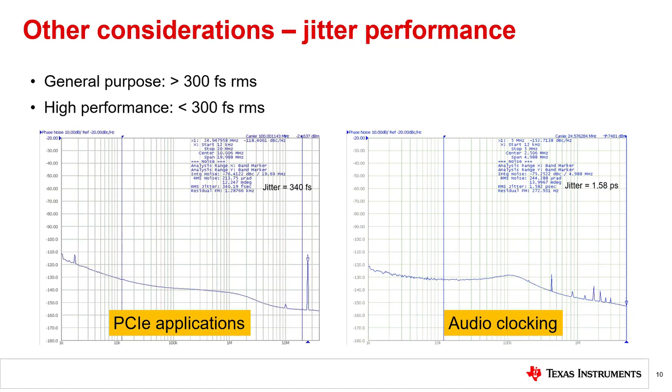High performance clock generators are usually built with high speed, low noise processes so that they can achieve less than 300 femtosecond RMS jitter. These devices are suitable for high performance systems requiring data rates of 10 gigabit per second, 25 gigabits, or even higher.